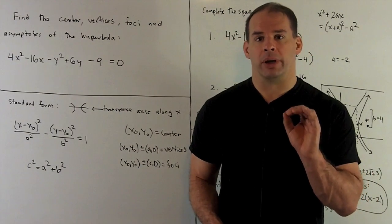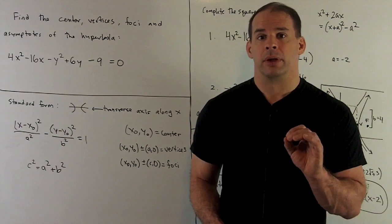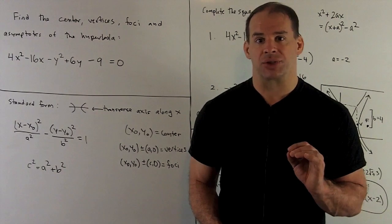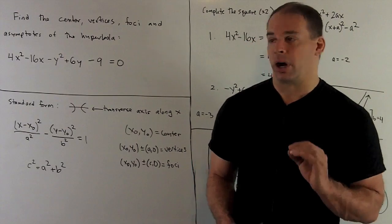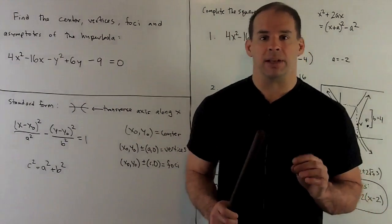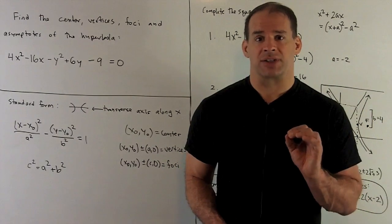The first thing we want to do is put our equation into standard form. To do that, we first have to figure out what direction the transverse axis goes in. If we look at our equation, we have a minus sign on the y², so that means the bowls are going to go like this. So our transverse axis is the x-axis.